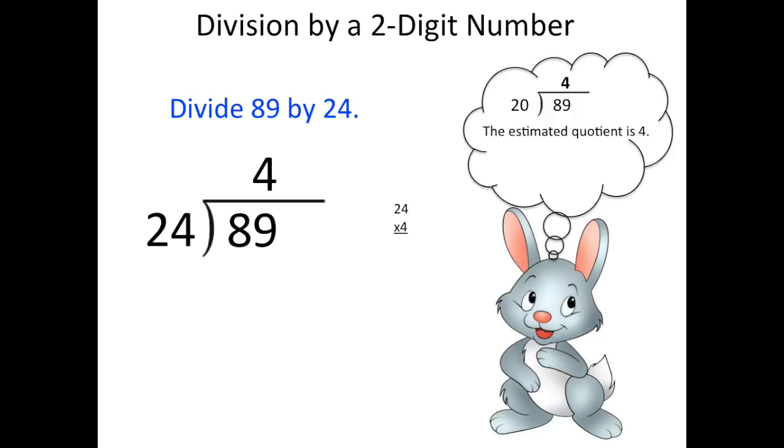And off to the side, he's going to do some math to solve. Now he sees that 4 times 24 is 96. 96 is more than 89. We can't subtract 96 from 89. So that means that the quotient 4 is too big. We now should try 3.